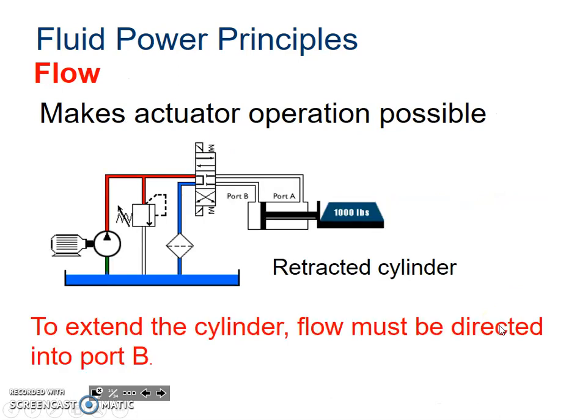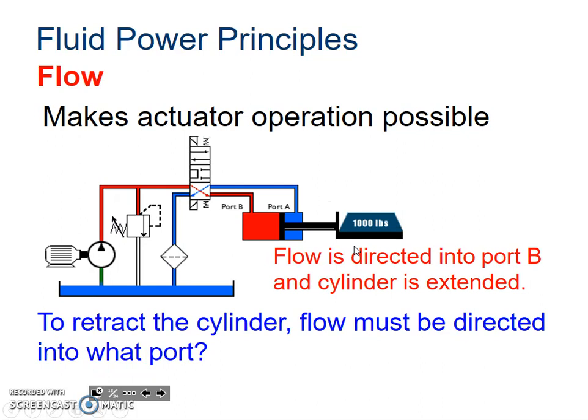So the flow makes the actuators operational. That's how it happens. To extend the cylinder, a flow must be directed into port B. So you're going to have your pressures in, and then you have to push on port B, and that's going to push it down. And then you subtract out B and add into A, and that's going to cause the piston to move back in.